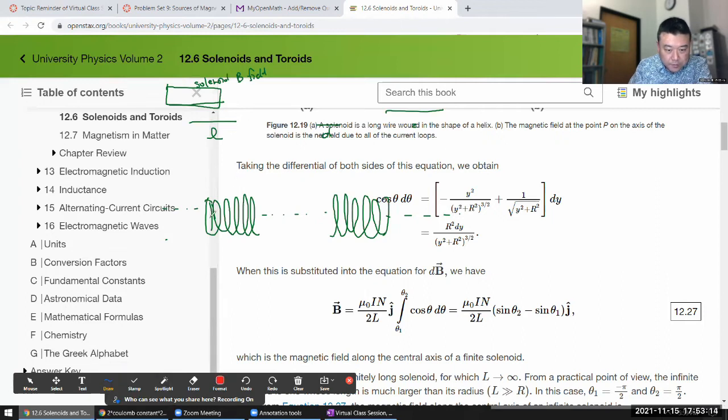The formula they derived for magnetic field is μ₀, which I'll write as 4πk/c², times the current I, times n (the total number of turns) divided by 2L, and they have this factor: sine of θ₂ minus sine of θ₁.